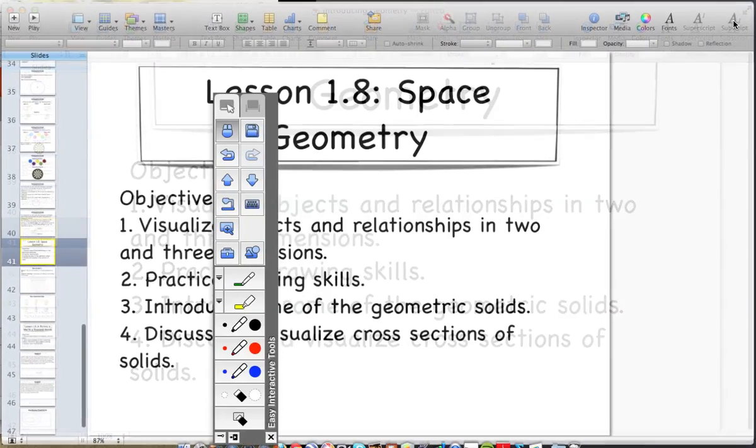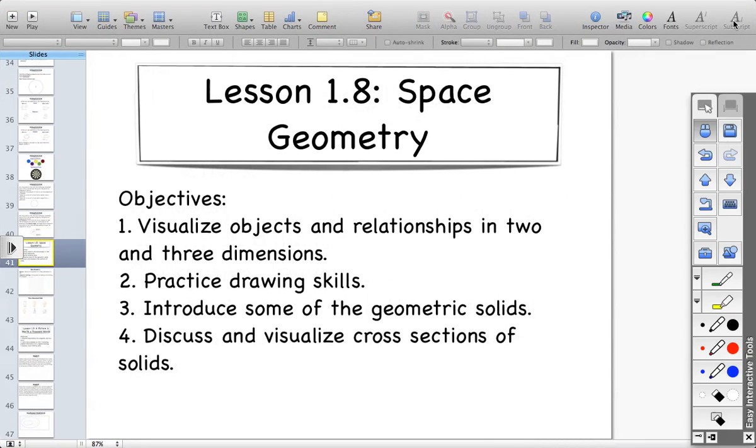In our textbook lesson 1.8 on space geometry. The objective of this one is to visualize objects and relationships in two and three dimensions. A big part of that is going to be to practice our drawing skills, how to draw three-dimensional figures.